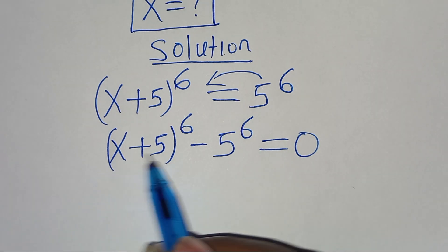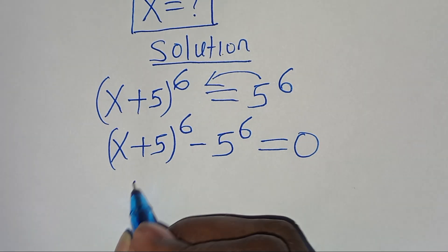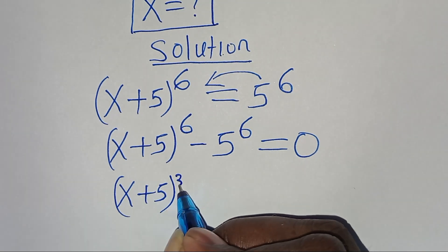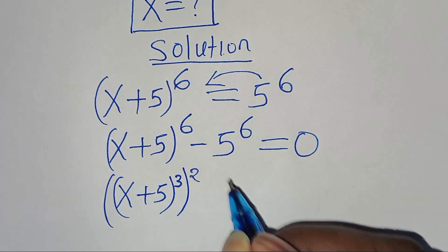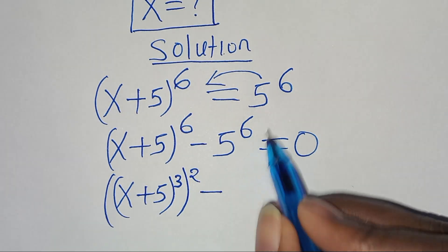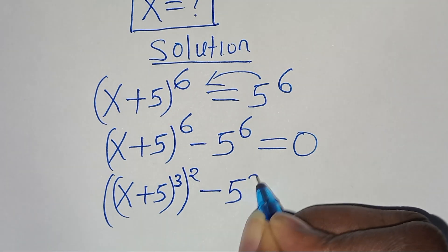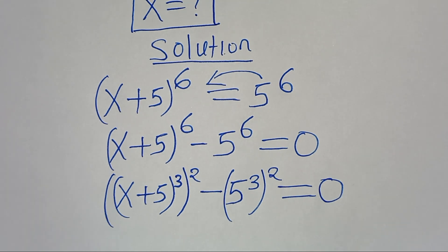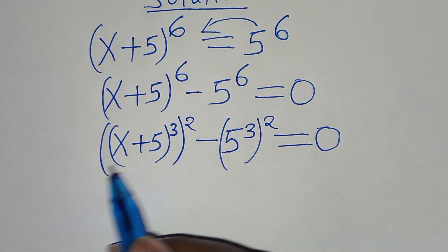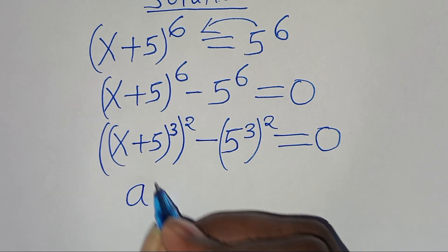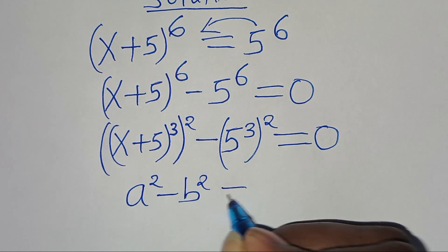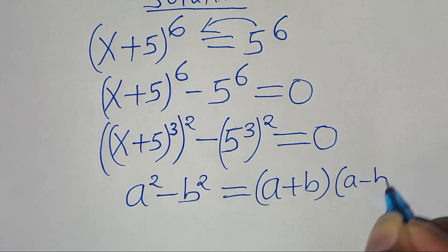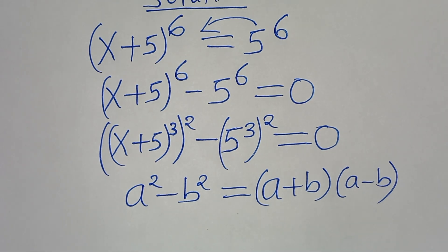We can express x plus 5 to the power of 6 as x plus 5 raised to the power of 3, then raised to the power of 2, subtract 5 to the power of 6, which we express as 5 to the power of 3 raised to the power of 2, equal to 0. This equation is in the form of a squared minus b squared, which equals a plus b times a minus b — the difference of two squares.